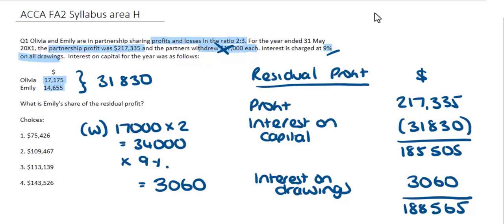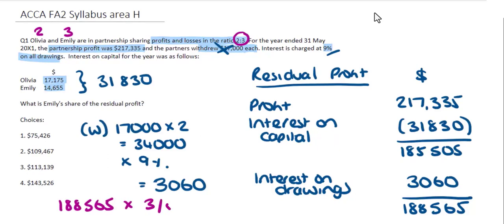The final step is to work out Emily's share. Olivia and Emily share profits and losses in the ratio 2 to 3, so Olivia is 2 fifths and Emily is 3 fifths of the profit. Taking $188,565 and multiplying by 3 over 5 gives us $113,139, which is the correct answer.